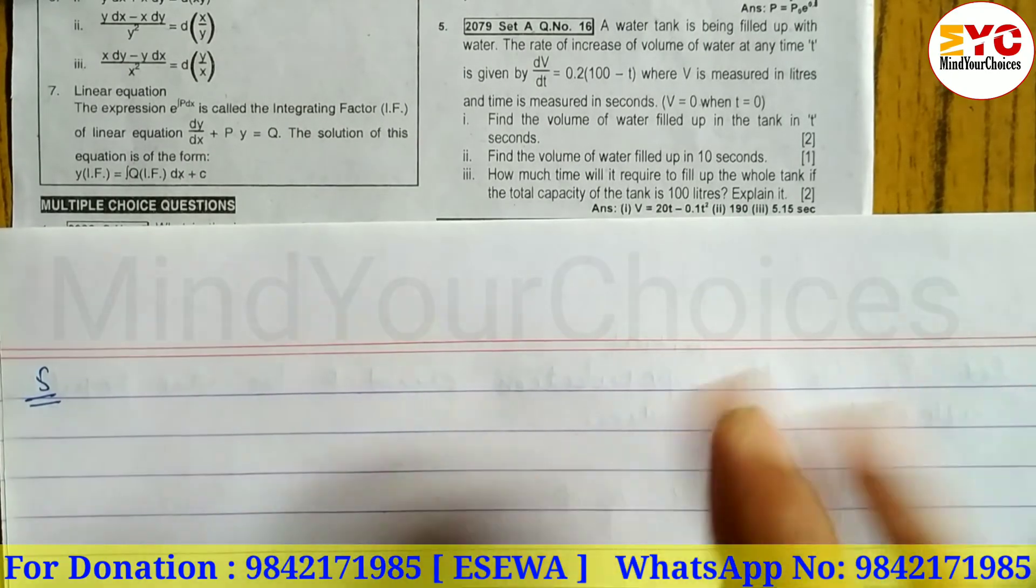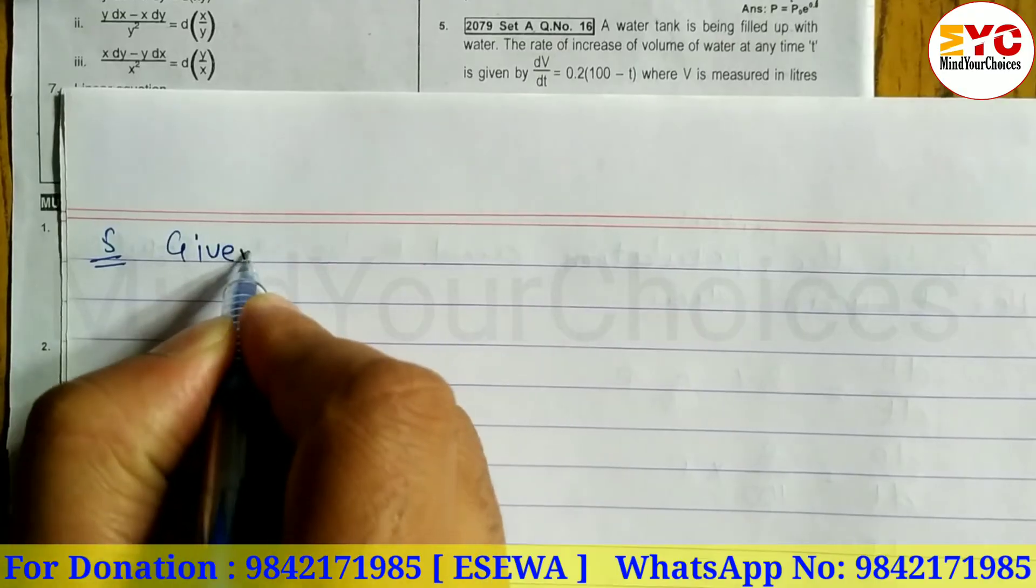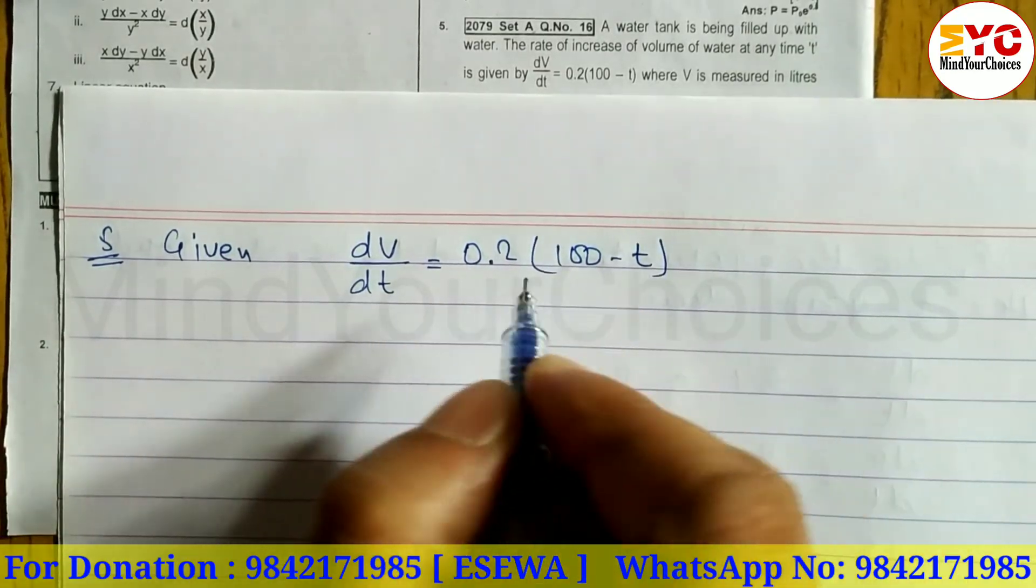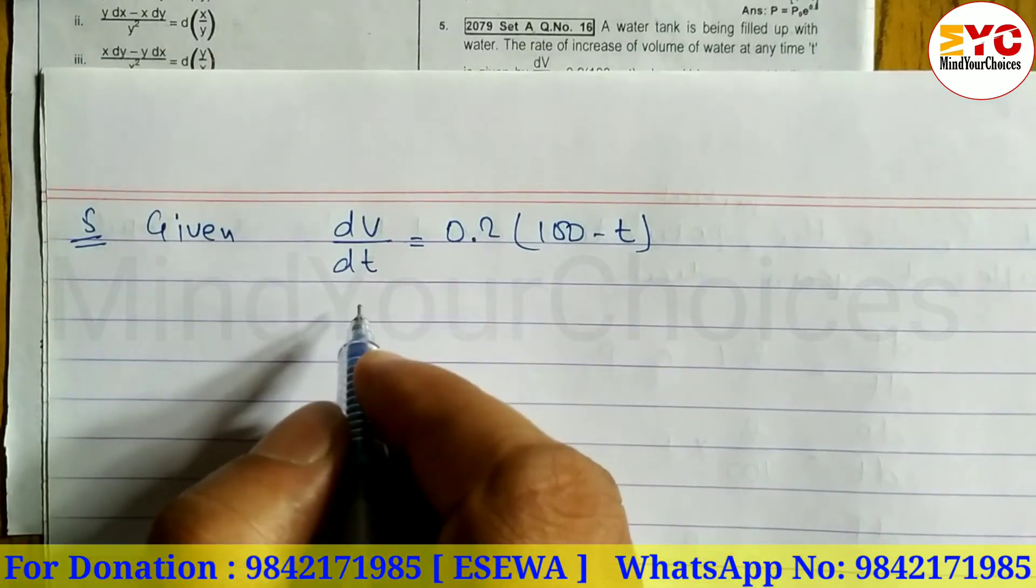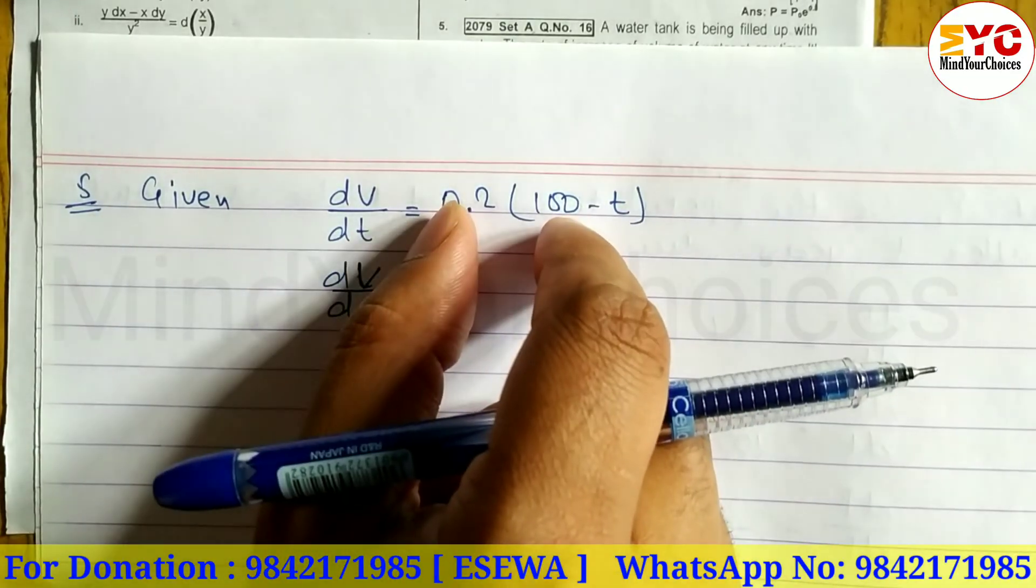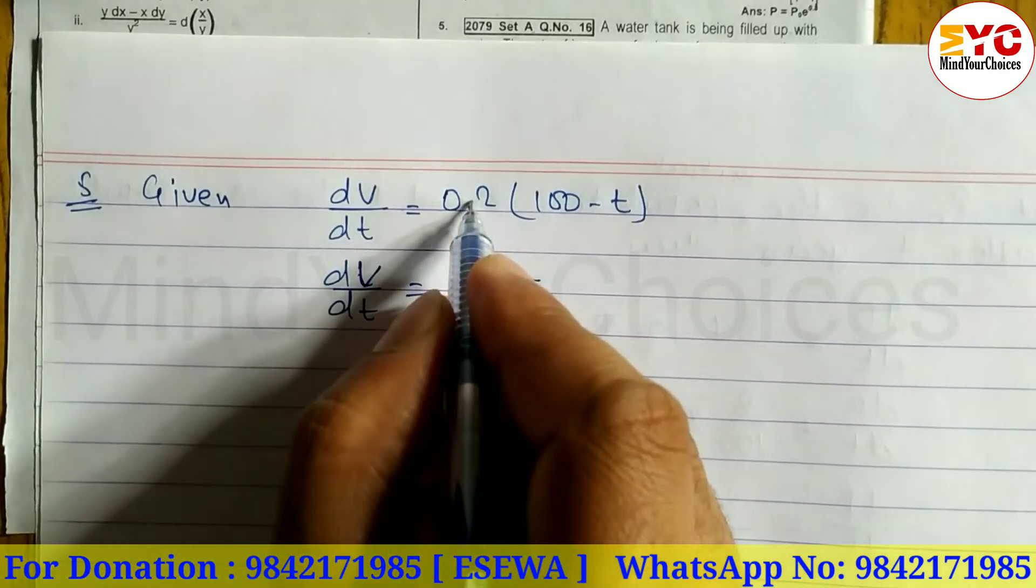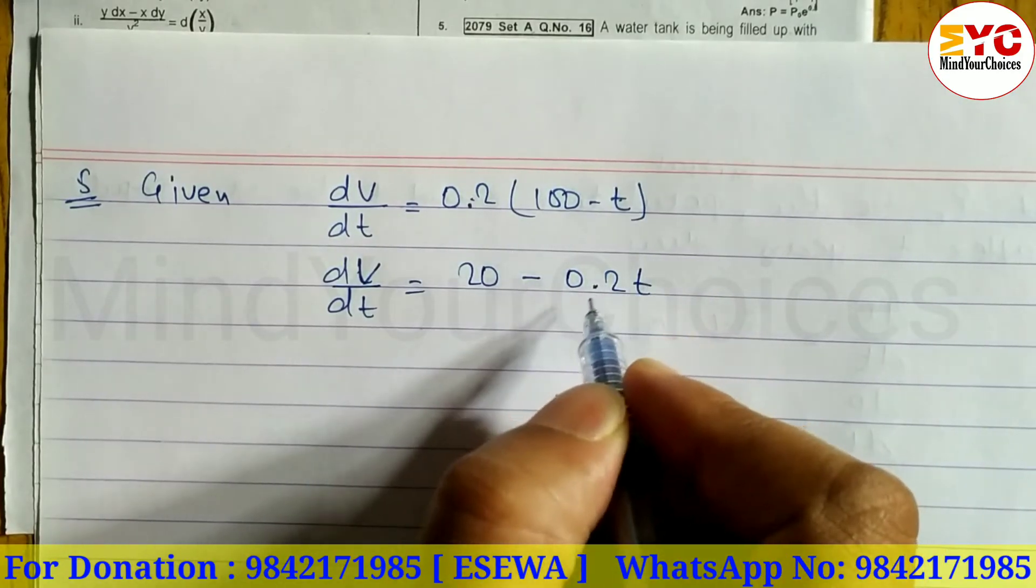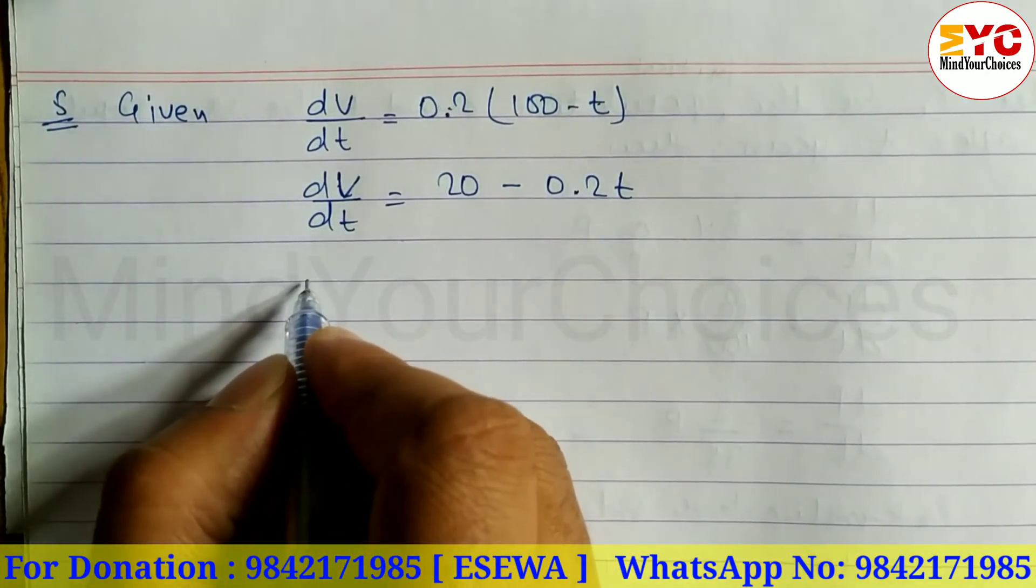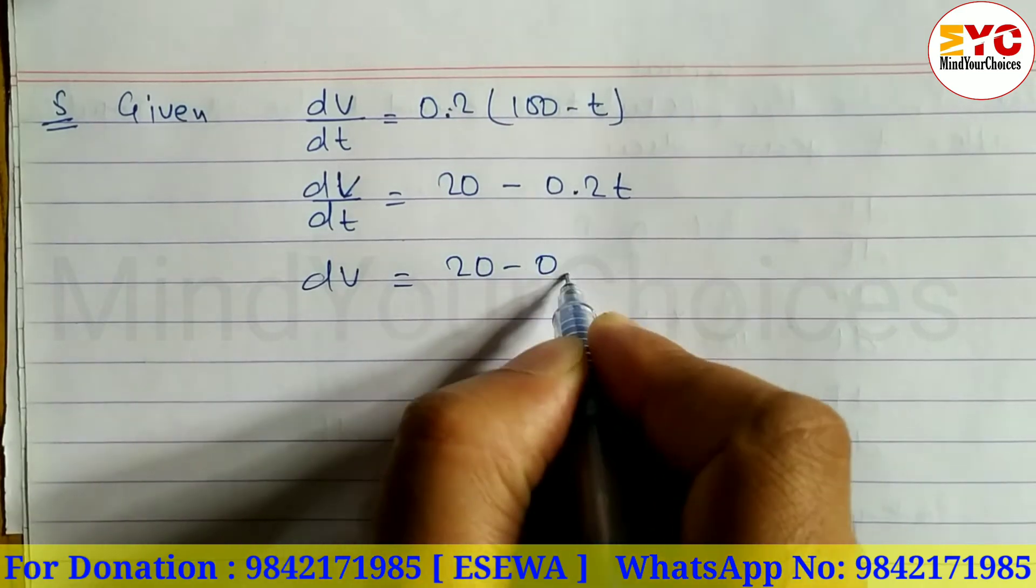Let's take a start. So we can write here the given differential equation. We can write here 20 minus 0.2T. So we can write it in front. So we can do cross multiply. We can write dV first.